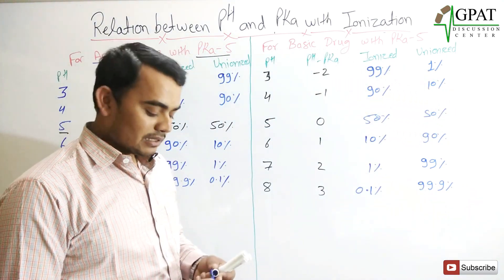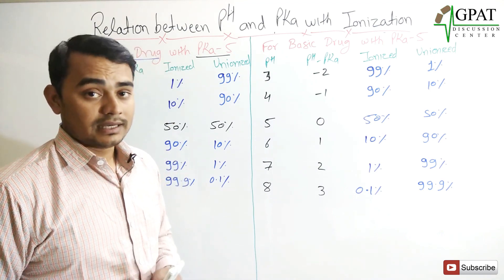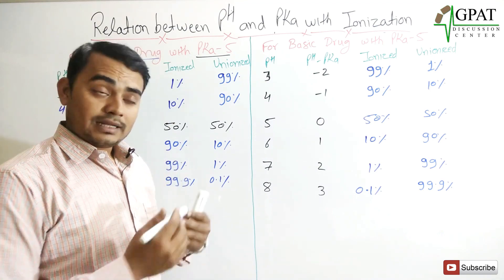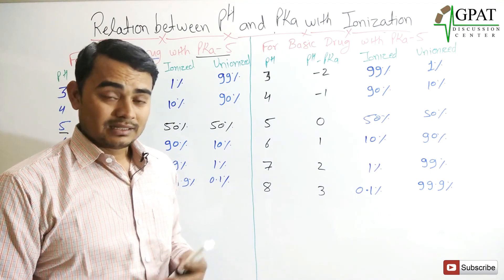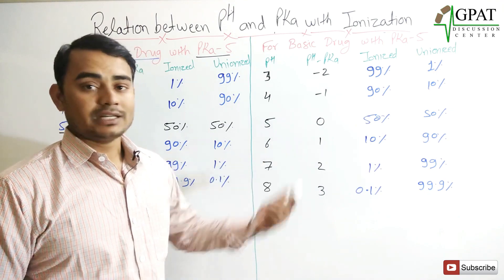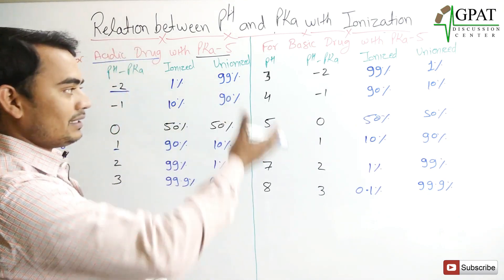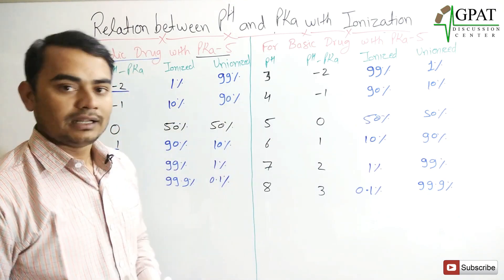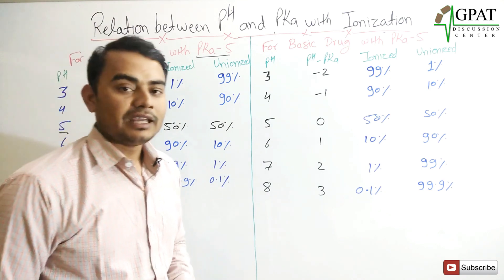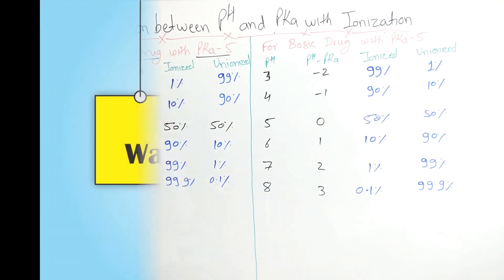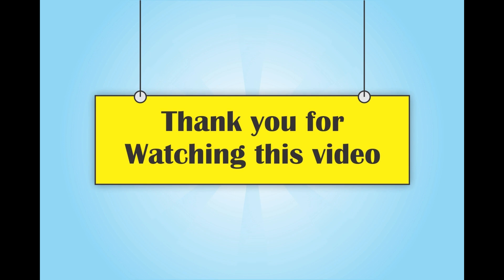Many exam questions ask: given the pKa of a drug and a certain pH, what happens to ionization and unionization? If you understand this chart, you will definitely give the right answer. Thank you.